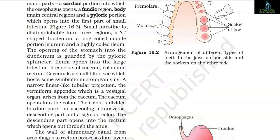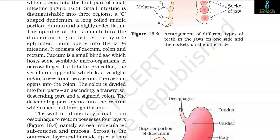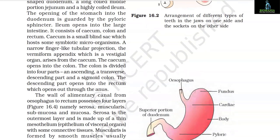The small intestine is distinguishable into 3 regions: a C-shaped duodenum, a long coiled middle portion called jejunum, and a highly coiled ileum. The opening of the stomach into the duodenum is guarded by the pyloric sphincter. The ileum opens into the large intestine, which consists of the cecum, colon and rectum. The cecum is a small blind sac which hosts some symbiotic microorganisms. A narrow finger-like tubular projection, the vermiform appendix, which is a vestigial organ, arises from the cecum.